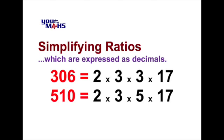So we've got it here where 306 and 510 have some common prime factors. In fact three of their prime factors are common: 2, 3, and 17.